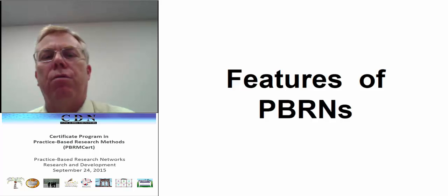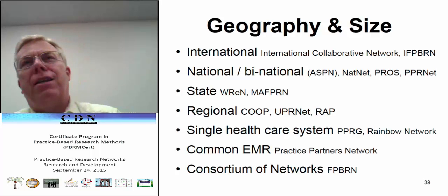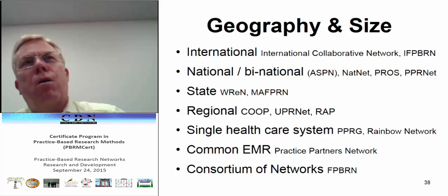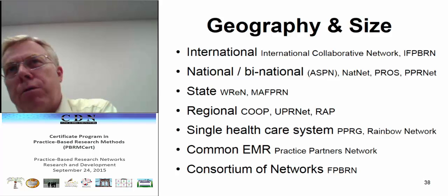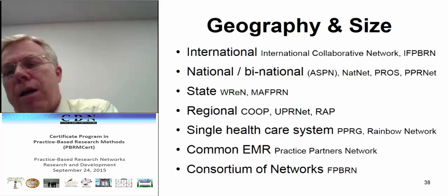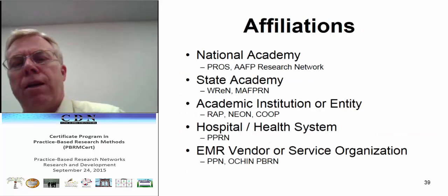Let me step back and look at how practice-based research networks are organized, because there are lots of ways of organizing. The first cut is geography and size: international networks, national networks like PROS pediatric network or the National Family Medicine network, state-based networks, regional networks, networks within a single healthcare system that often has the advantage of a common electronic medical record, and consortium networks that get together for larger studies — often studies where you want variability in the healthcare system or local environment.